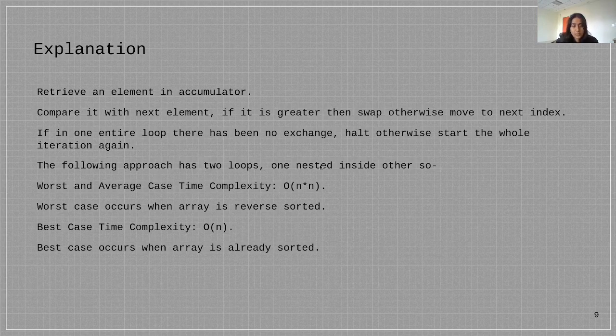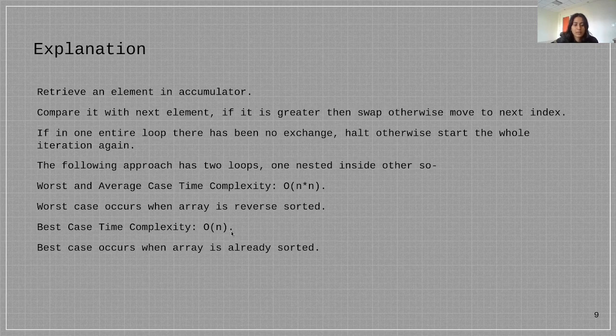The following approach has two loops, one nested inside the other. So the worst and average case time complexity is O(n²) and the worst case occurs when the array is in reverse order. The best case time complexity is O(n) and this is when the array is already sorted.